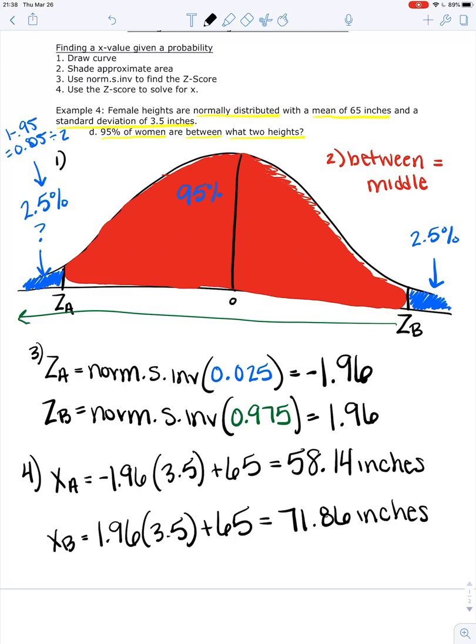So 95% of women are between 58.14 inches and 71.86 inches tall. And that is how you find the X values when you're given the middle probability or the probability in between the two values. And that is it.